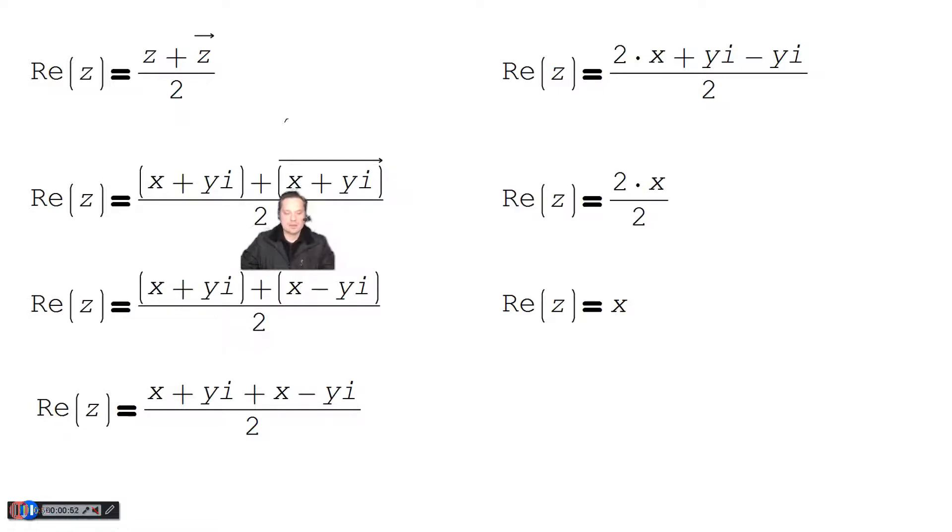Then apply the conjugate operator. So that basically just makes this negative in the middle here above my head. After that, you can just drop all the parentheses, and you get x plus yi plus x minus yi over 2.